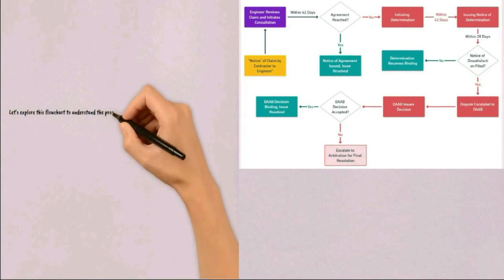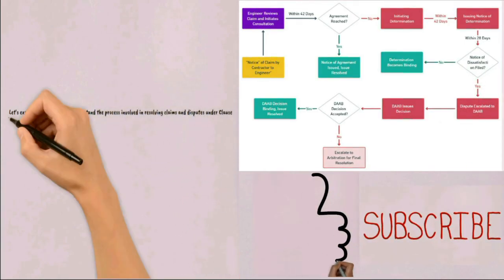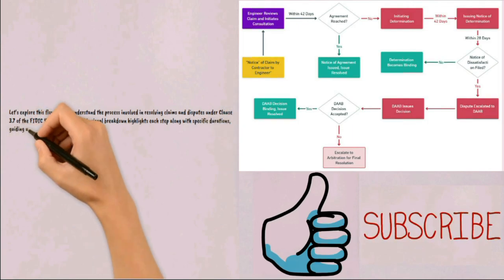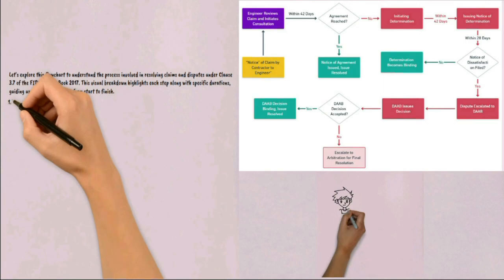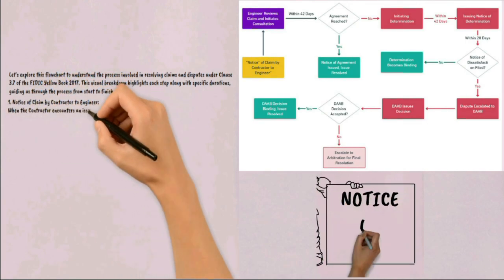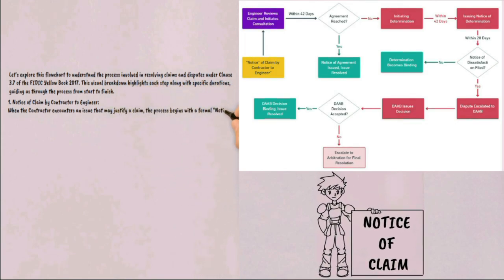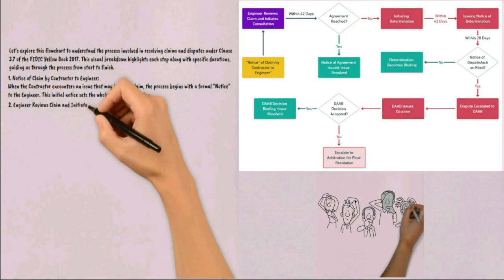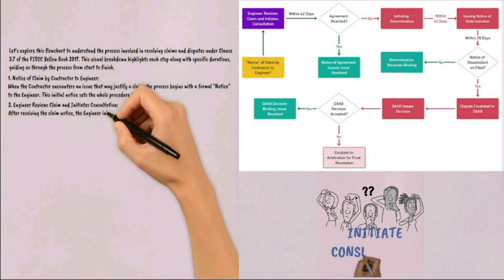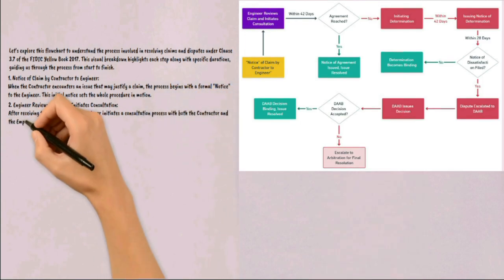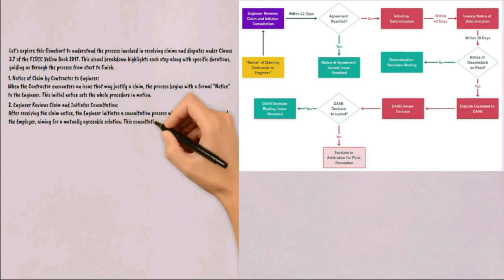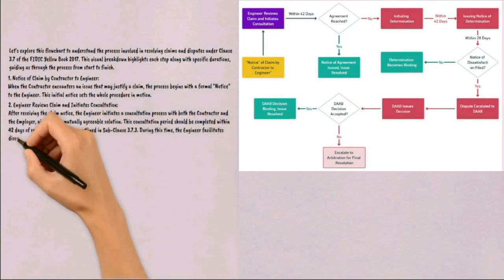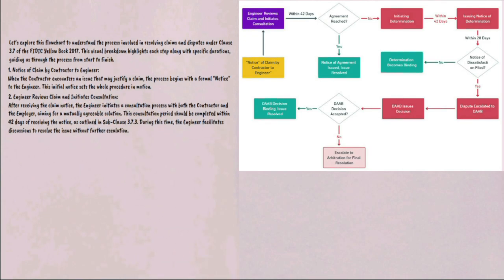Let's explore this flowchart to understand the process involved in resolving claims and disputes under Clause 3.7 of the FIDIC Yellow Book 2017. This visual breakdown highlights each step along with specific durations, guiding us through the process from start to finish. Step 1: Notice of Claim by contractor to engineer — when the contractor encounters an issue that may justify a claim, the process begins with a formal notice to the engineer, which sets the whole procedure in motion. Step 2: Engineer reviews the claim and initiates consultation — after receiving the claim notice, the engineer initiates a consultation process with both the contractor and the employer, aiming for a mutually agreeable solution. This consultation period should be completed within 42 days of receiving the notice, as set out in Sub-clause 3.7.3, during which the engineer facilitates discussions to resolve the issue without further escalation.